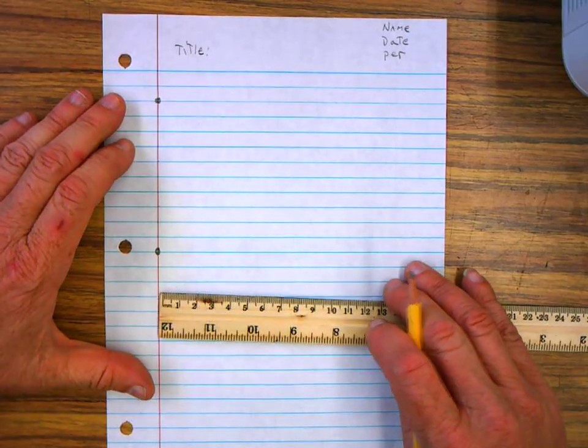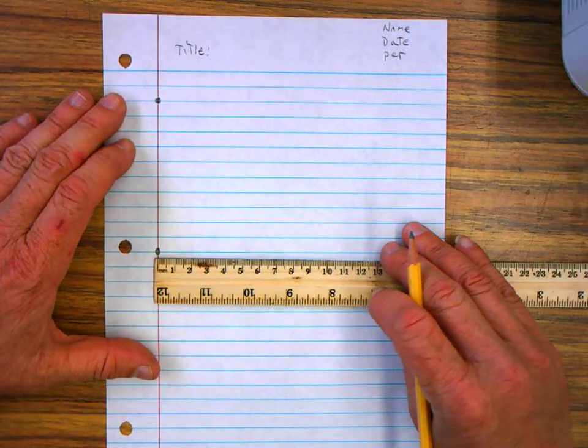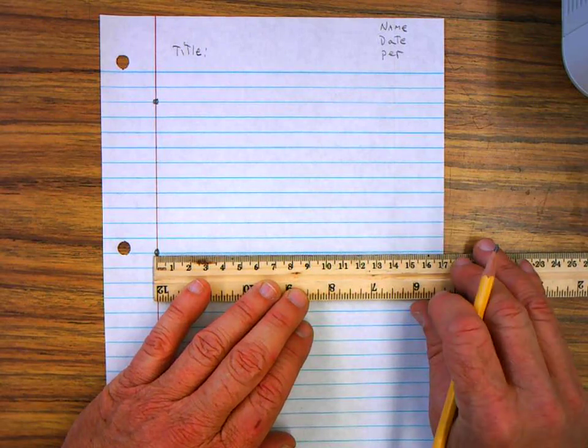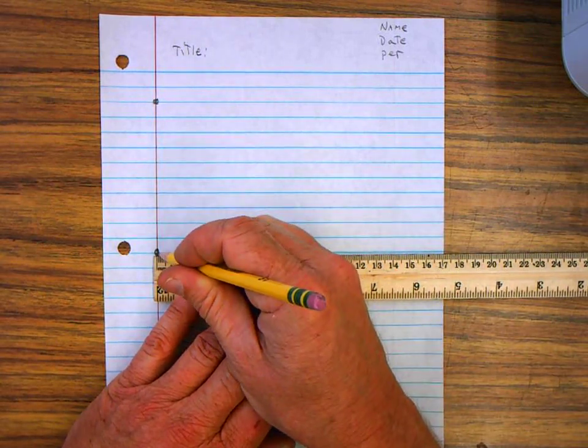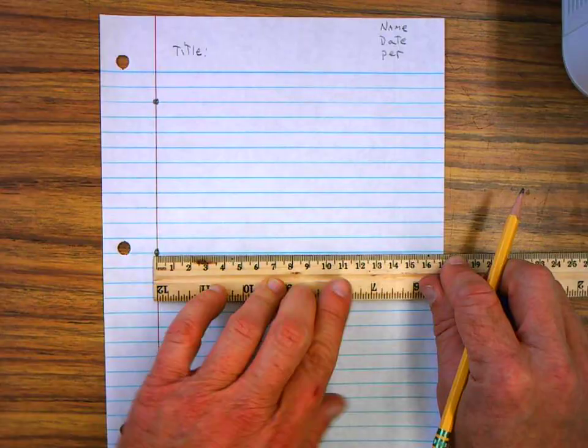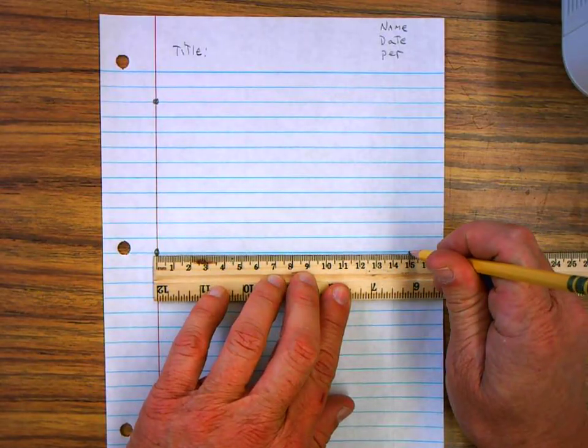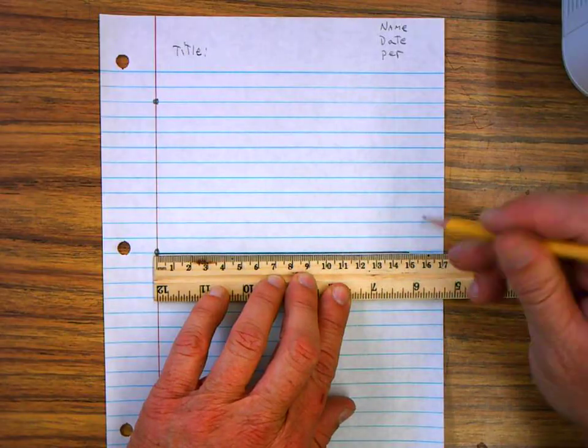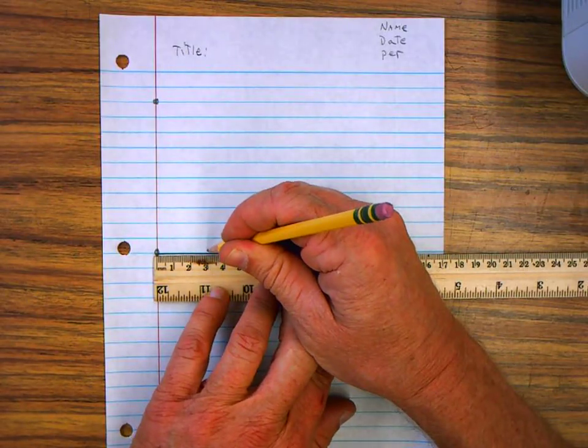Then you're going to take your ruler, using the metric side of the ruler, and you're going to line up your zero point right here on that red margin line. And you're going to draw a line fifteen centimeters across. And then you're going to mark it every three centimeters.